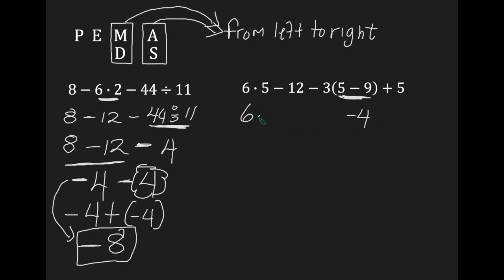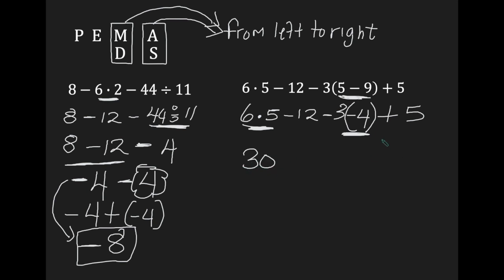Let's write back everything we did not use: minus 12, take away, we have a 3 here with parentheses, plus 5. Do we have any exponents? No. Can we multiply or divide from left to right? Going from left to right, I have a multiplication here and one here as well, so we're going to do both. 6 times 5 is 30. And 3 times negative 4 is negative 12.